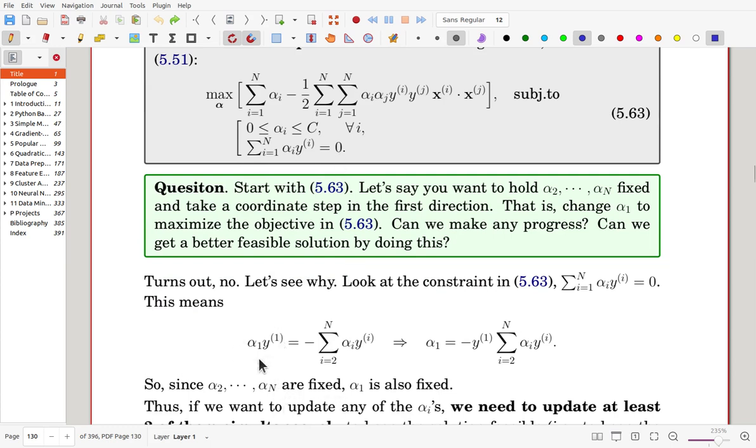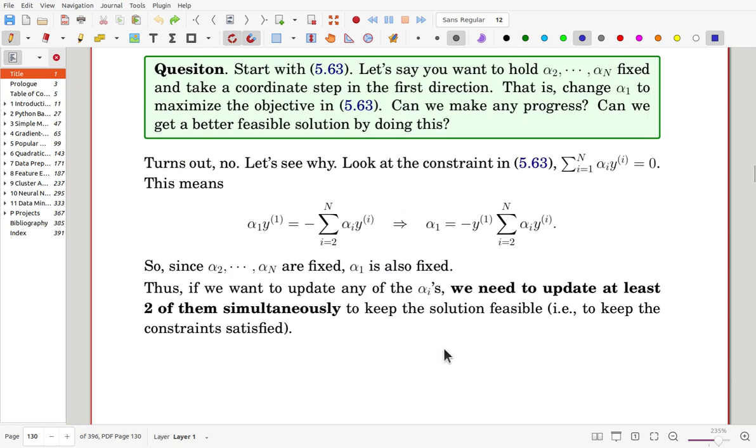For the first one in the left and for the others, we move to the right. So that we can get alpha 1 is same as this term. Once alpha 2 to alpha n are fixed, then alpha 1 also must be fixed. So we cannot update the values one by one. If you change alpha 1 only, then this equality constraint will be violated. So here the conclusion is that we need to update at least two of them simultaneously to keep the solution feasible.